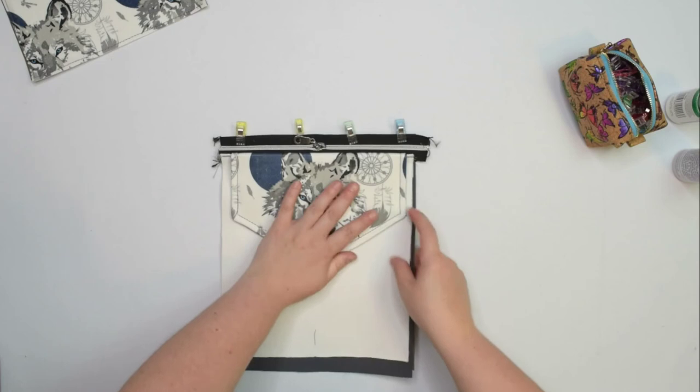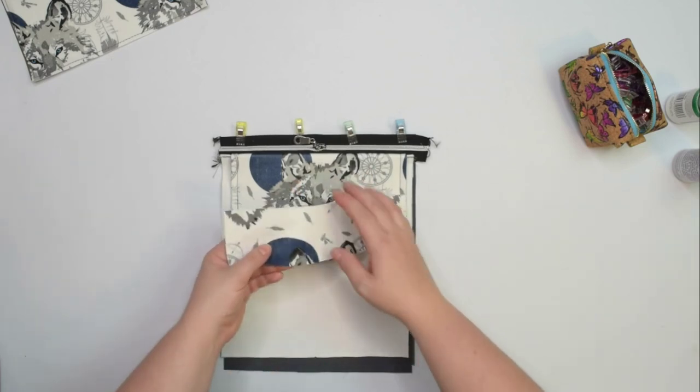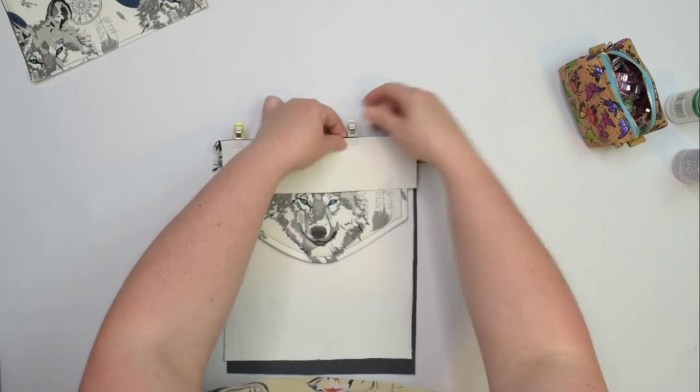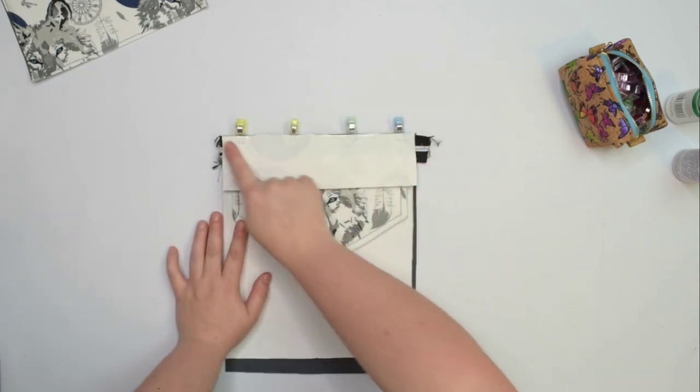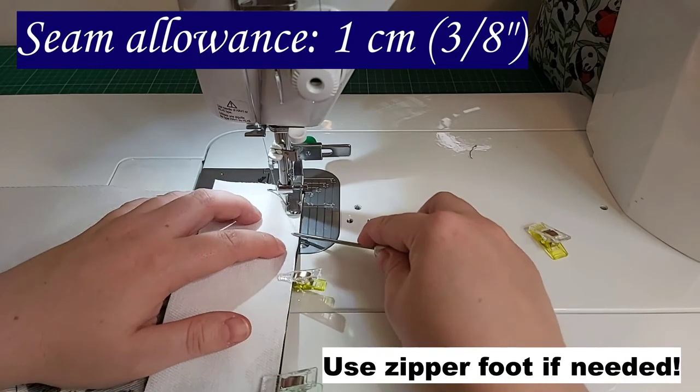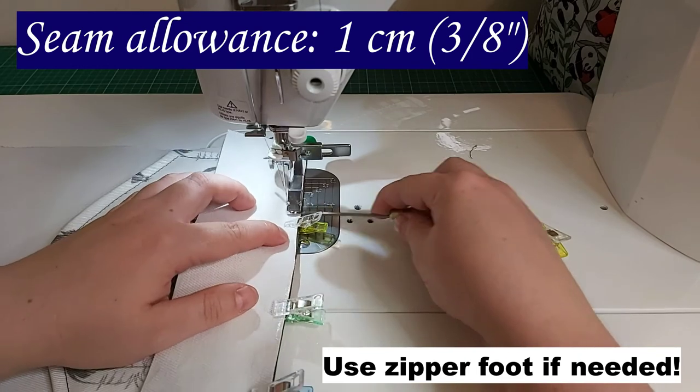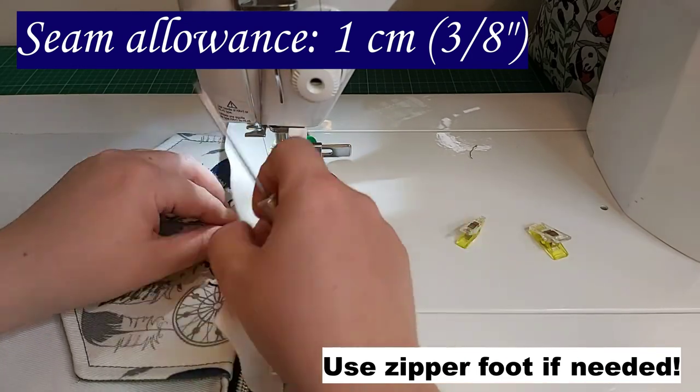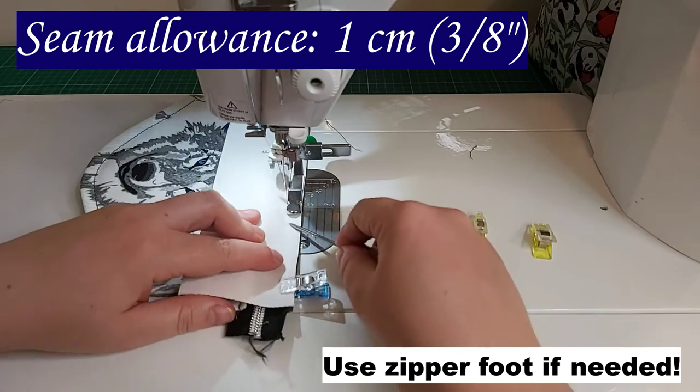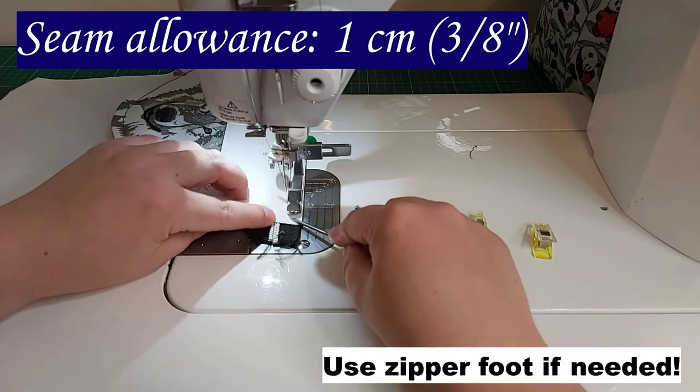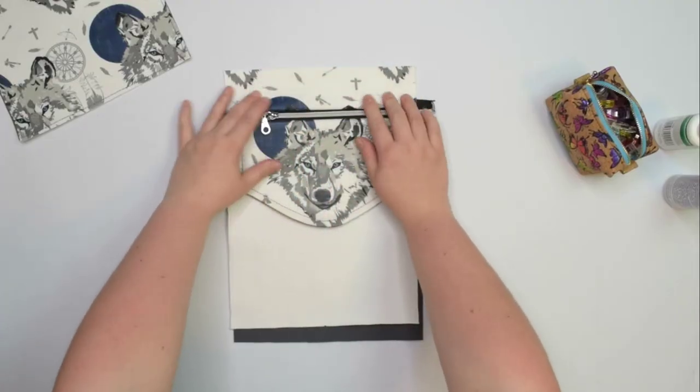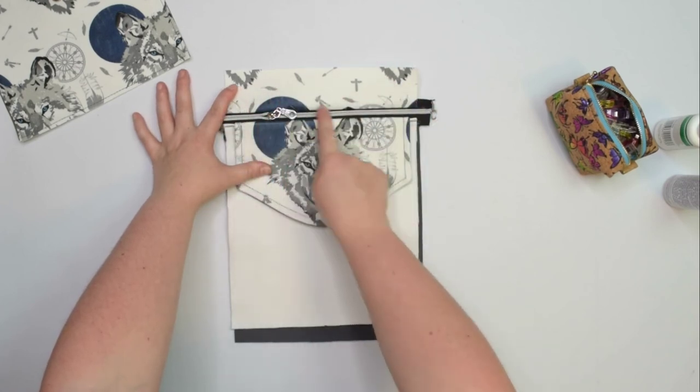Otherwise, take the top panel and with right side facing down, line it up on top of the zipper. Move the clips to hold everything together. Then sew the seam using 1cm seam allowance. Move the seam allowance towards the top panel and topstitch along the seam.